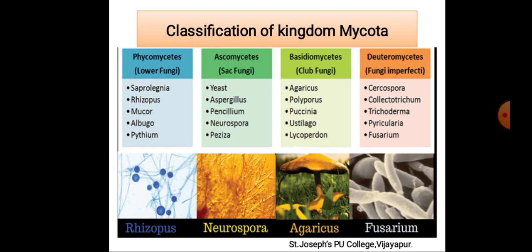Basidiomycetes involves examples like Agaricus, or mushrooms, Polyporus, Puccinia, Ustilago, and Lycoperdon.